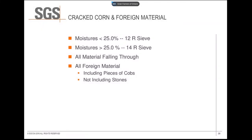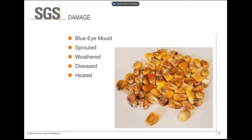Cracked corn and foreign material is the equivalent to dockage, assessed using a 12-round sieve for moistures less than 25%, or a 14-round sieve for moistures above 25%. CCFM is all material that falls through the sieve, plus any foreign material including pieces of cobs. Stones are not counted in CCFM — they have their own category since stones damage equipment during the corn milling process. Damaged kernels are whole or pieces affected by mold, sprouts, ground damage, weathering, disease, frost, or heat.